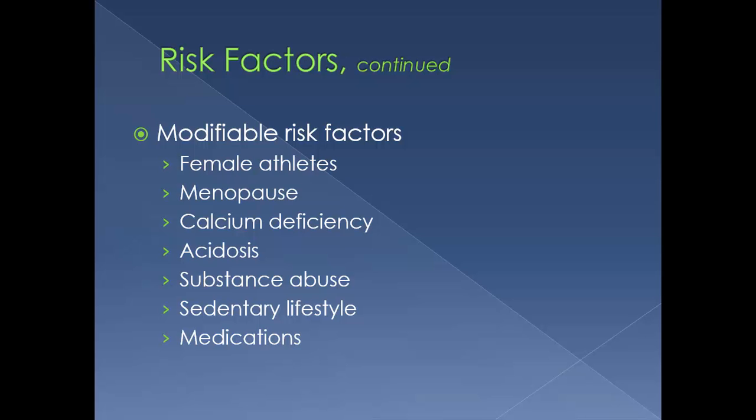Some of your modifiable risk factors involve female athletes, especially those with an emphasis on leanness like gymnastics and cross-country running. They are at increased risk due to a triad of health problems: they usually have disordered eating, low bone mass, and amenorrhea.